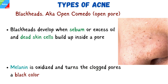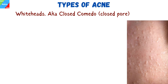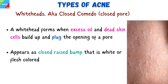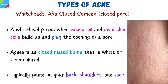Melanin is oxidized and turns the clogged pores a black color. They are often found on your back, shoulders, and face. Whiteheads are also known as closed comedo, which means closed pore. A whitehead forms when excess oil and dead skin cells build up and plug the opening of a pore. This causes a blemish that is raised and white or flesh colored. The bumps remain closed and are under the skin.